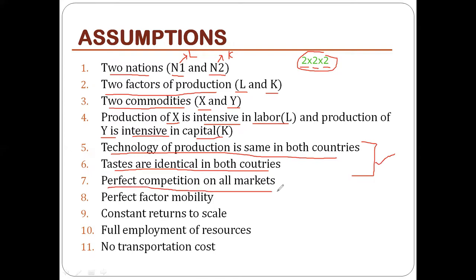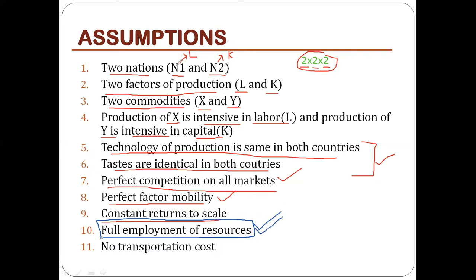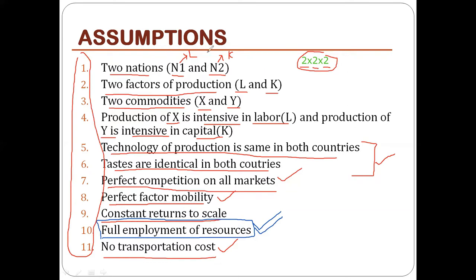There is perfect competition in all markets — both commodity and labor markets. There is perfect factor mobility, meaning labor and capital are perfectly mobile between the production of one commodity and another. There are constant returns to scale. The crucial assumption is full employment of resources, which plays a big role in explaining the theory. Finally, there is no transportation cost, giving us 12 assumptions in total.